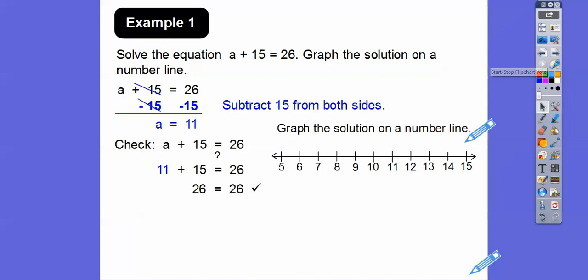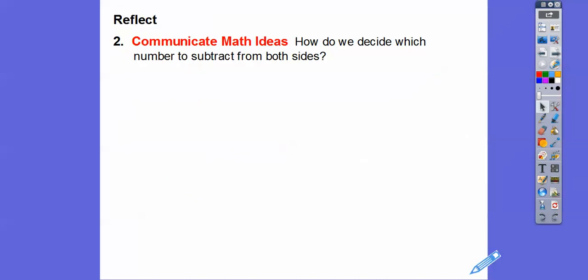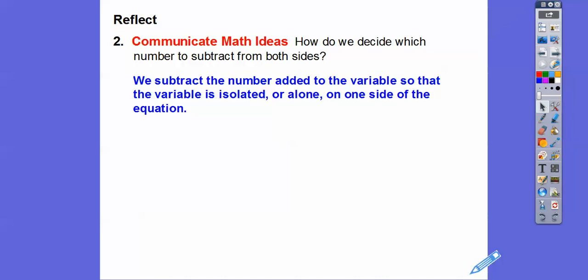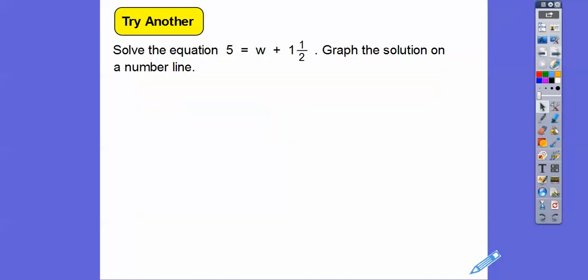How do we decide which number to subtract from both sides? We subtract the number that was added to the variable so the variable can be isolated — alone on one side of the equation. Here's another one: solve the equation 5 equals w plus 1 and one-half, and graph the solution on the number line. We're going to subtract 1 and one-half from both sides. 5 minus 1 is 4, and 4 minus one-half gives us 3 and one-half, so w equals 3 and one-half.